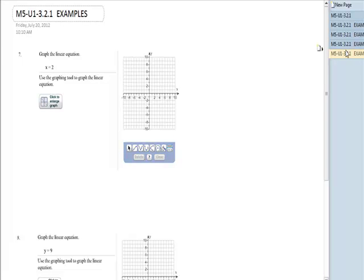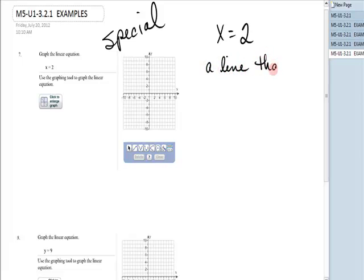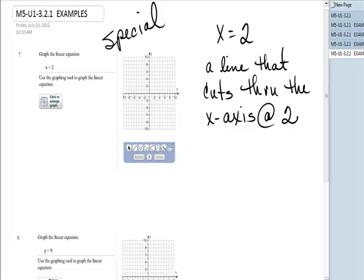Now, do you remember from a previous examples that x equals 2, and this takes us all the way back to maybe just the last video, or maybe two videos ago. x equals 2 is what I call one of the special equations because it does not have a y in it. You don't have to actually make a t-chart on these. If it's x equals 2, you will get a line that cuts through the x axis at 2.